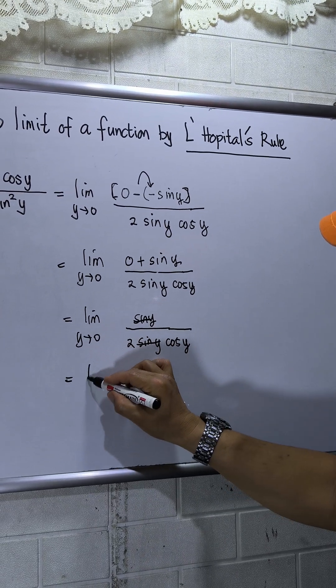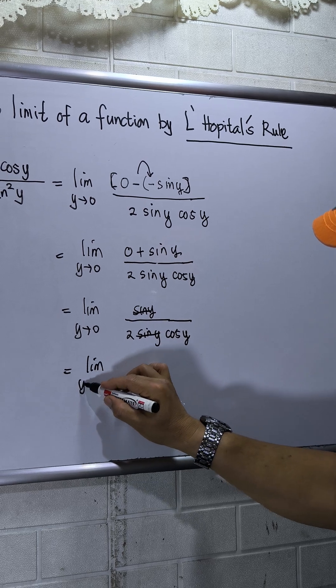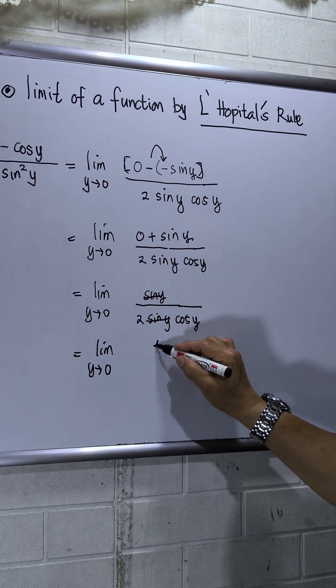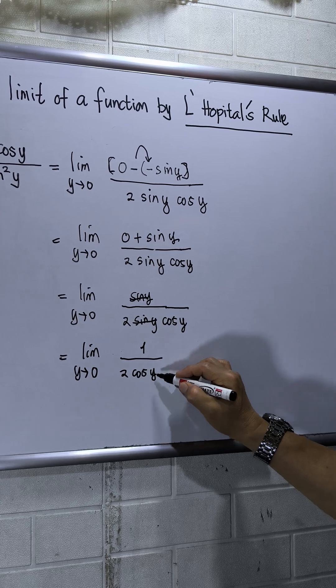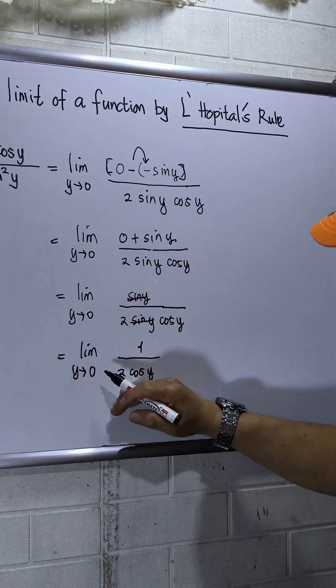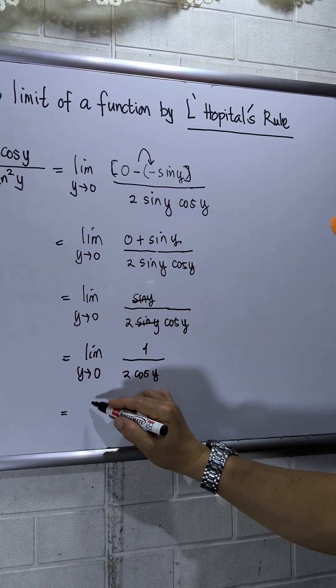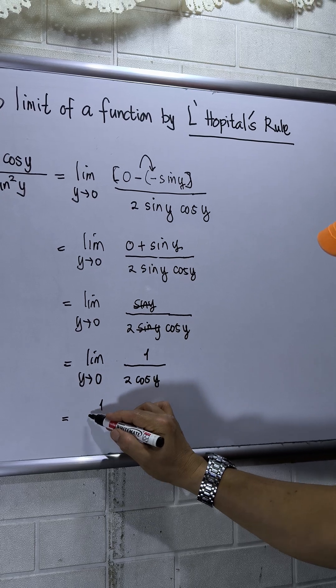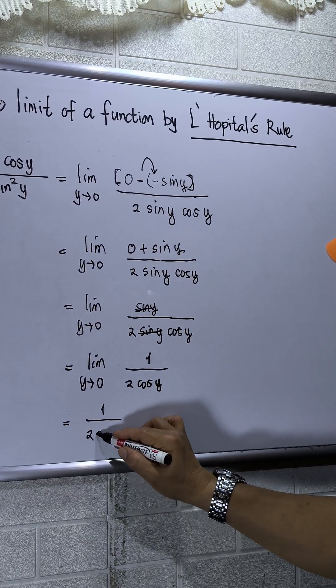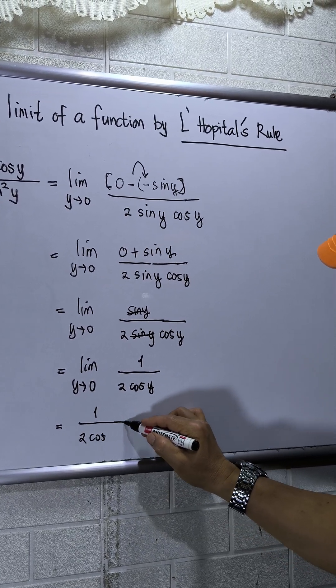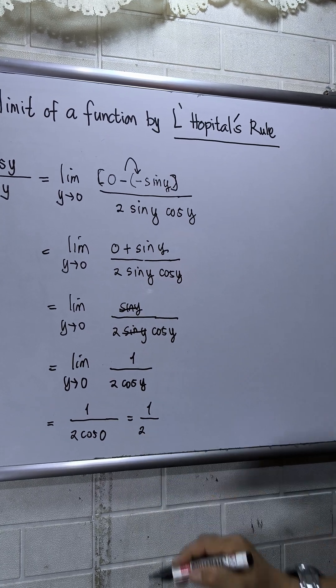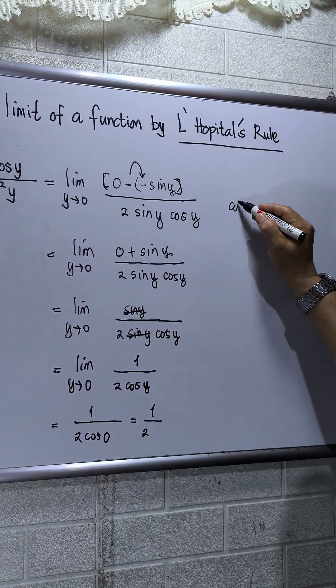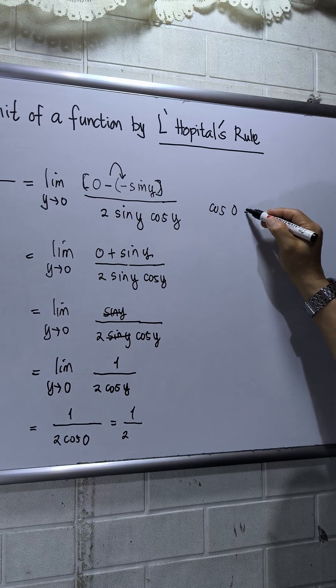I have now 1 over 2 cos y. So I can plug in now the value of y with 0. This will be 1 over 2, cos 0 is equal to 1.